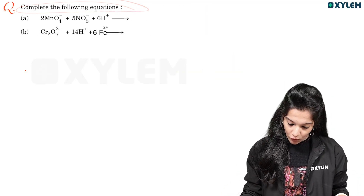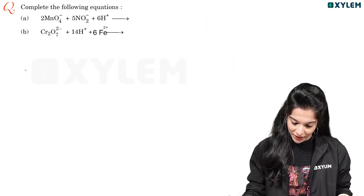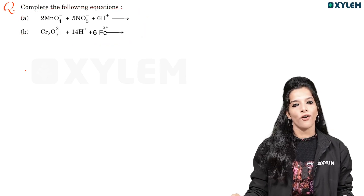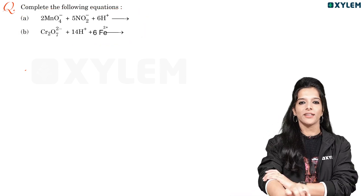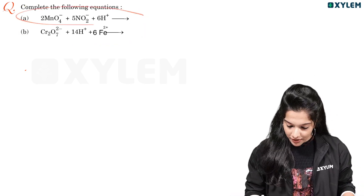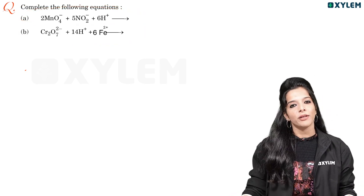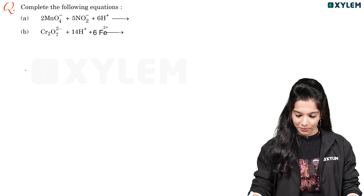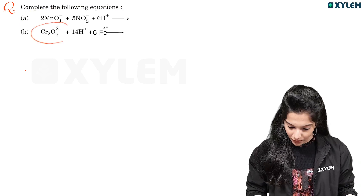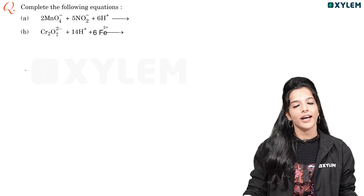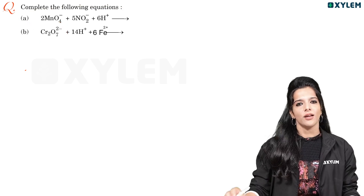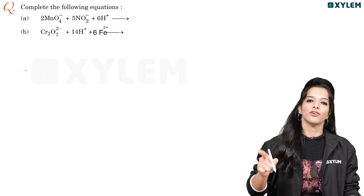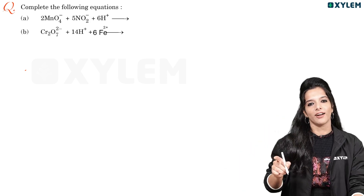Let's complete the following equations on oxidation properties. One thing is MnO4- — potassium permanganate. The other is potassium dichromate. Both potassium permanganate and potassium dichromate are important for the exam.